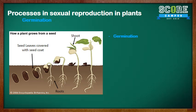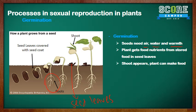The last process in sexual reproduction in plants is germination. Seeds need air, water, and warmth to germinate. The root of a baby plant grows out of the seed, as you can see here. The plant is still unable to make food, so it gets its nutrients from the food stored in the seed leaves. This is what provides the young plant with food since it cannot photosynthesize yet. When the shoot appears, the plant can now photosynthesize and make its own food, so the seed leaf drops. And that is germination.